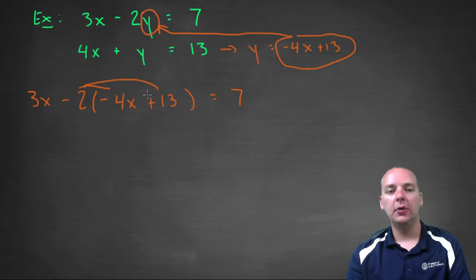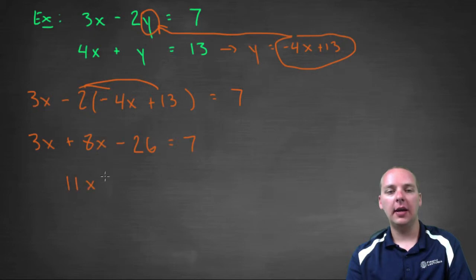Let's distribute the negative two. We'd have 3x + 8x, because that's minus a negative, minus 26 = 7. Combine like terms, so 11x equals—let's take 26 and add it to the right hand side—we'll get 33. Divide both sides by 11 and you'll get x = 3.